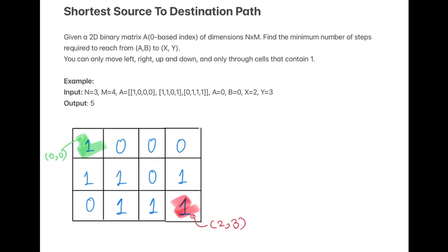Let's read the problem statement. Given a 2D binary matrix of dimension N cross M, find the minimum number of steps required to reach from (a, b) to (x, y). We can only move left, right, up, and down — no diagonal movement — and only through cells that contain 1. Zero is a wall and one is a traversable path.